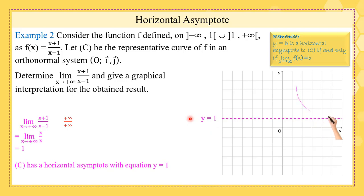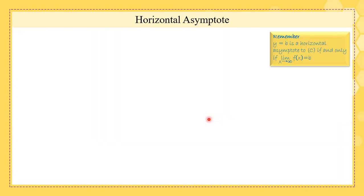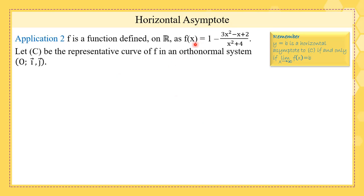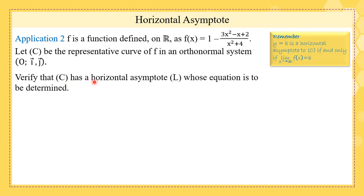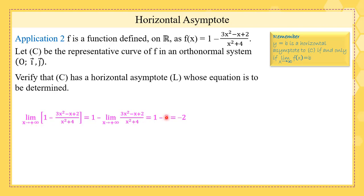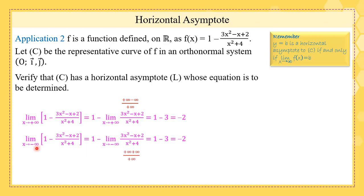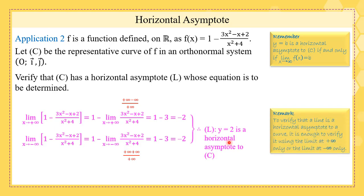This is the way we deal with horizontal asymptotes. When x is plus infinity, the distance between the asymptote and the curve tends to zero — they are very close to each other. Now this application: we have a function, the question is to verify that C has a horizontal asymptote whose equation is to be determined. If we find the limit at plus infinity, using the leading term this becomes 3, so we have 1 minus 3 which is negative 2. The limit at minus infinity is also negative 2, so the line y equals negative 2 is a horizontal asymptote.